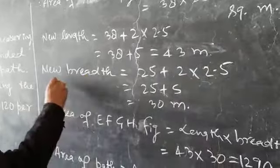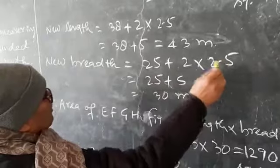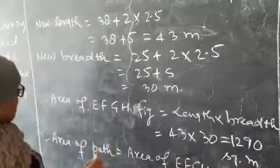Now, new breadth is equal to 25 plus 2 into 2.5. That will be 25 plus 5, that is 30 meter.